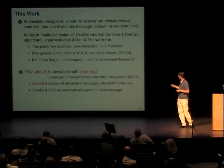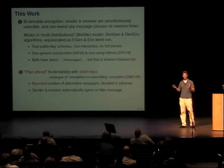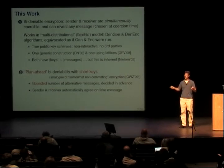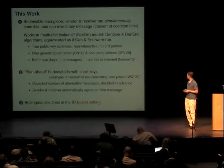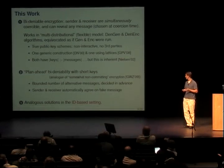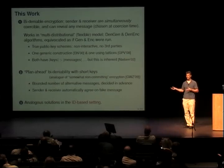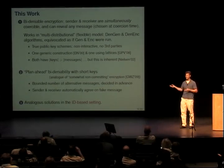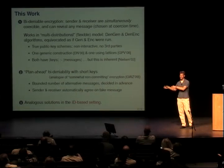This plan-ahead notion is an analog of what's called somewhat non-committing encryption by Garay, Wichs, and Zhou from Crypto '09. Another good benefit is that the sender and receiver automatically agree on what the fake message and real message are. When you have a coercion problem, if Alice and Bob are put in separate rooms and asked what the real message was, they might equivocate to different messages — which would look bad. The plan-ahead scheme lets them both know what the innocent message is. We also give analogous solutions in the identity-based setting, where you go to a public key generator or authority who extracts a secret key for you, so under coercion you can ask the PKG to make it decrypt in a different way.